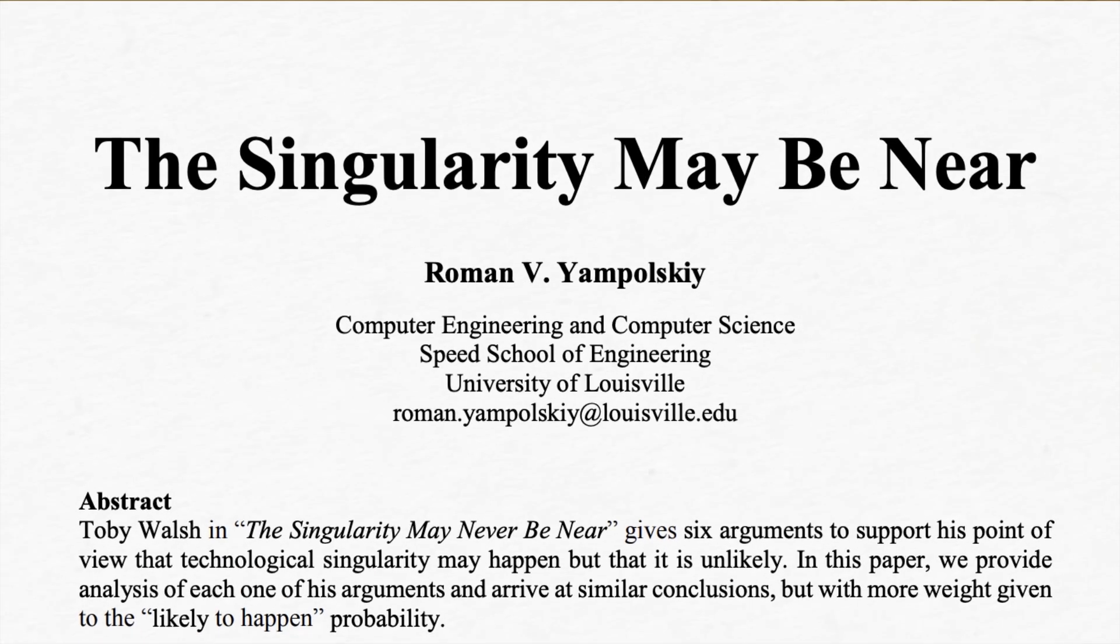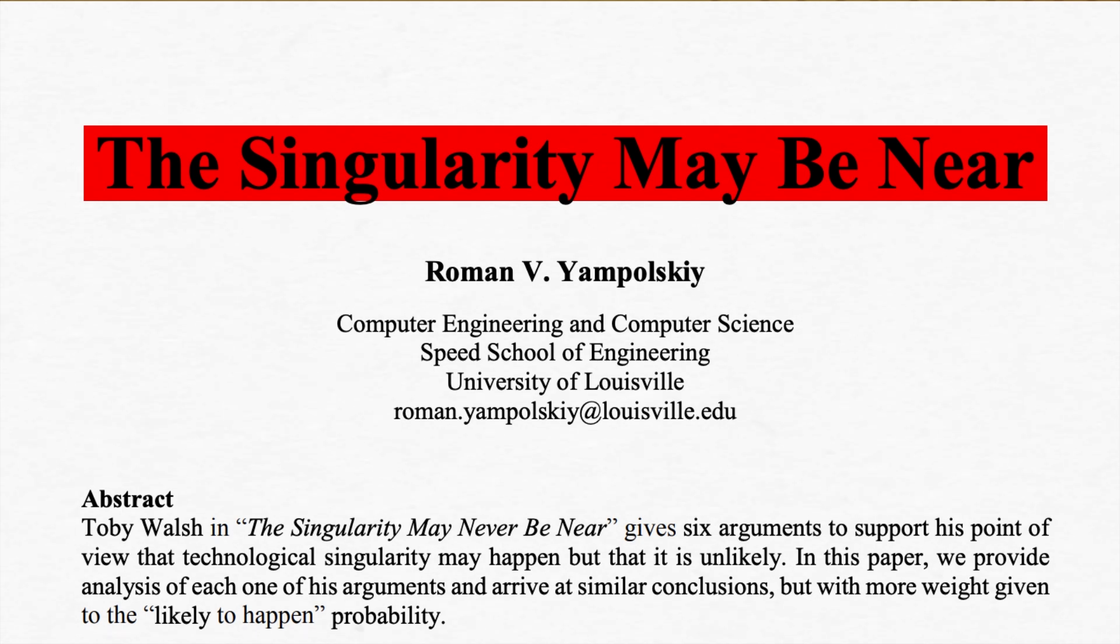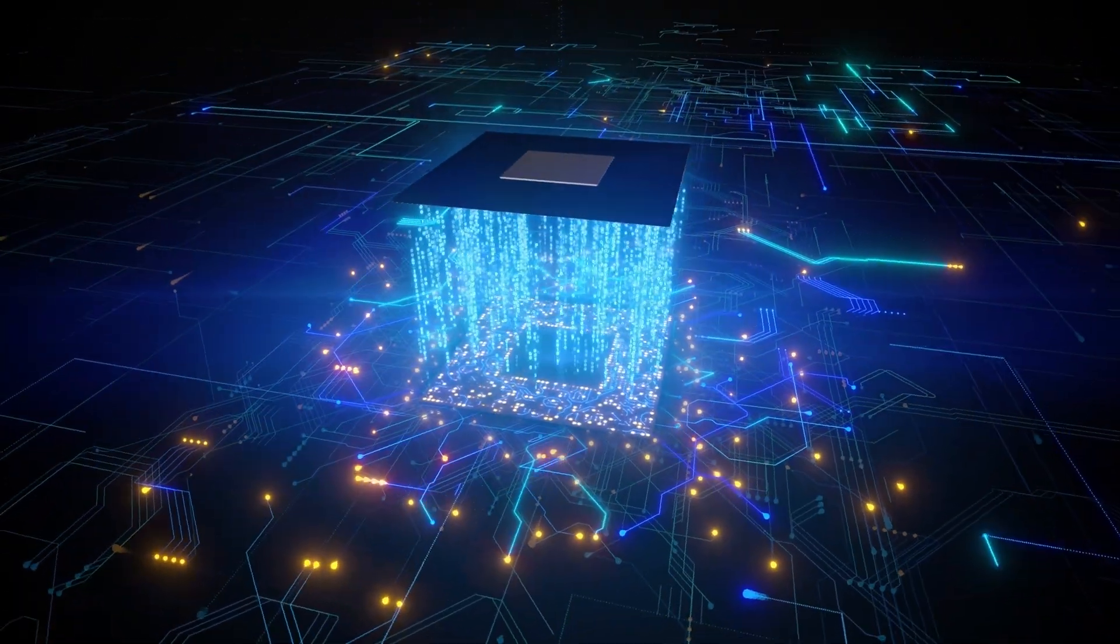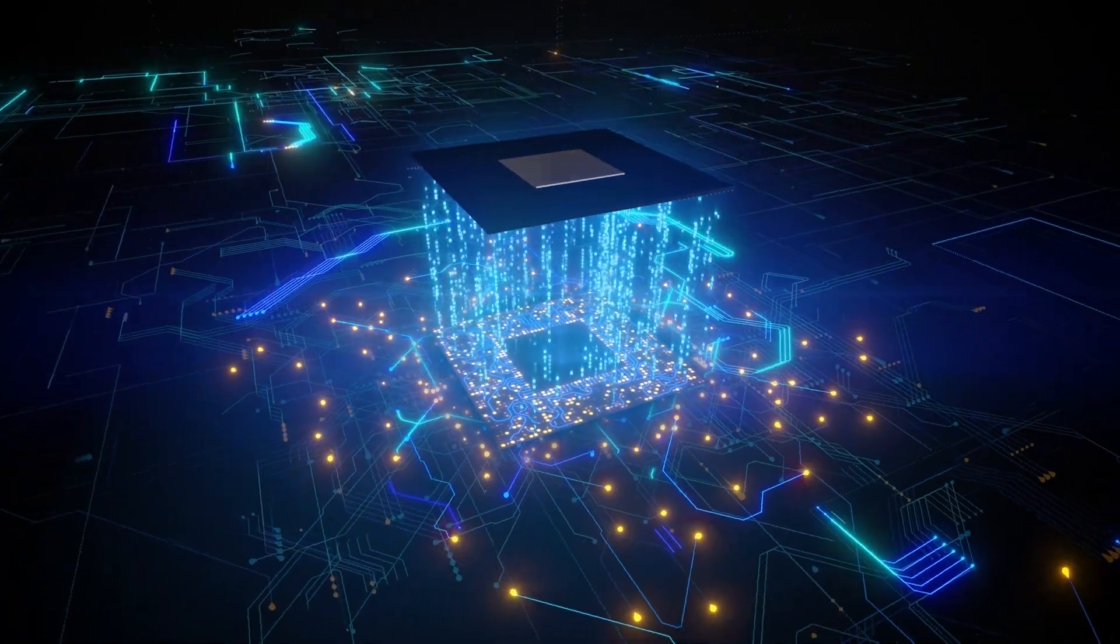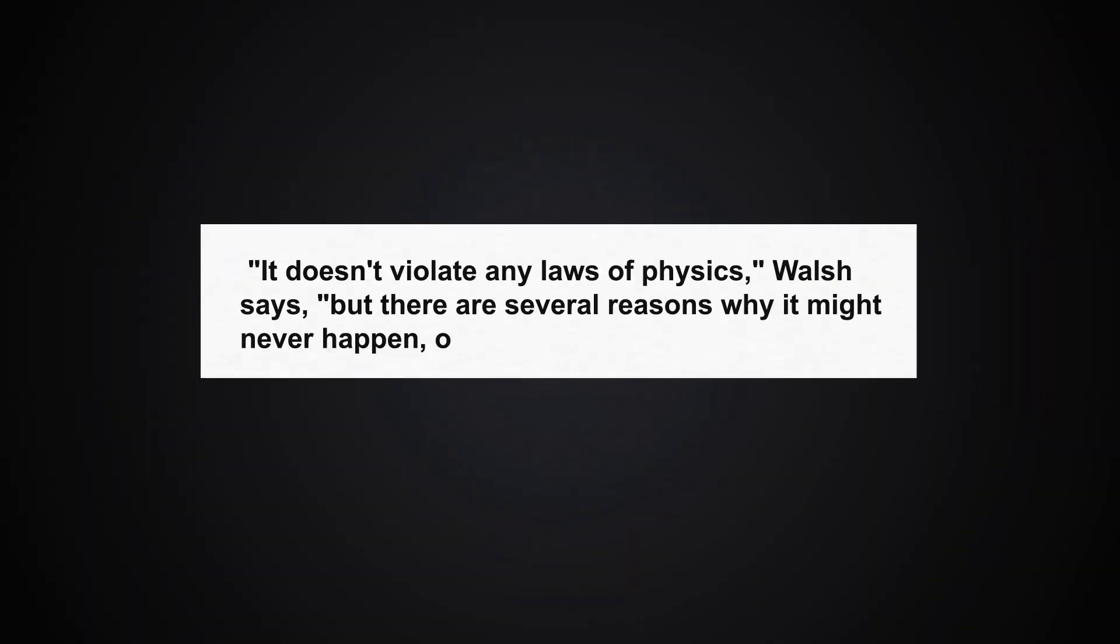But not everyone shares Kurzweil's rosy outlook on the singularity. Take Toby Walsh, an AI researcher who offers a more grounded perspective in his 2017 paper. However, the singularity may never be near. Instead of a robot uprising, Walsh sees future superintelligence as more of a gradual development, still under human control. He acknowledges the possibility of AI surpassing human intelligence, but doubts it'll happen abruptly or become self-aware enough to trigger a catastrophic singularity.